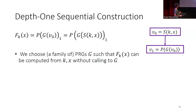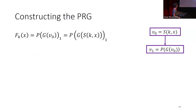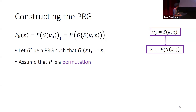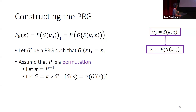Let's try to do this. We start from a PRG G-prime such that the first bit of the output of G-prime equals the first bit of its input — such a PRG can easily be constructed from any PRG. Assuming P is a permutation, let pi be the inverse of P. The PRG we use is the composition of pi on G-prime: to compute G on input S, compute G-prime on S, then apply permutation pi on the output. If pi is efficiently computable, then G is a PRG because we just applied a permutation on the output of a PRG.